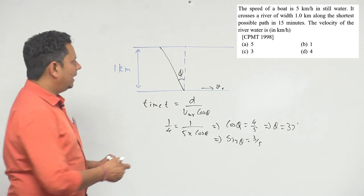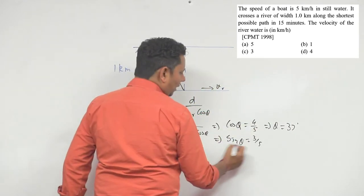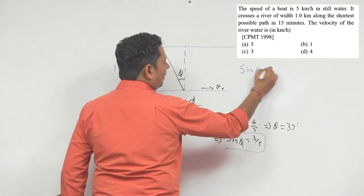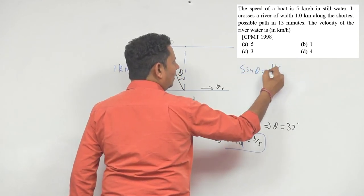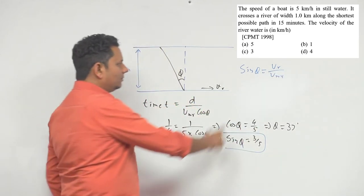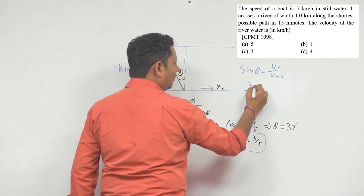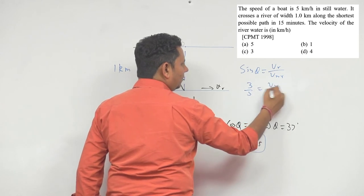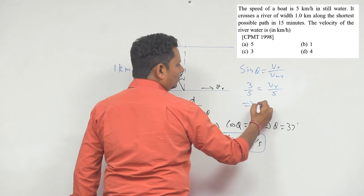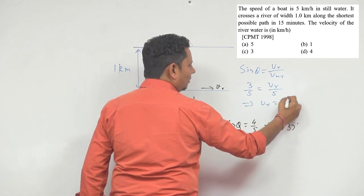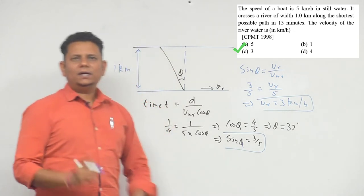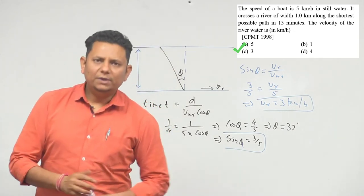This gives us vr equal to 3, which means option number c would be the correct choice.